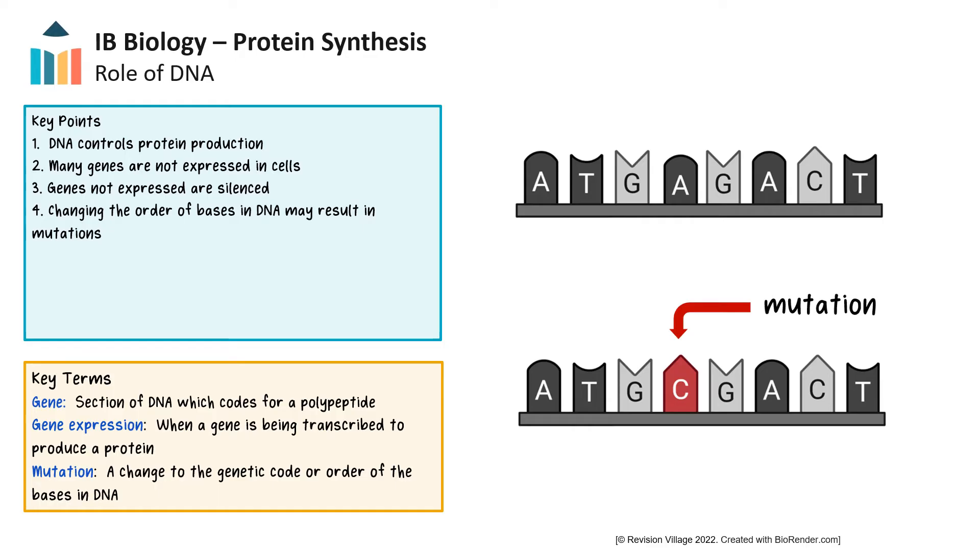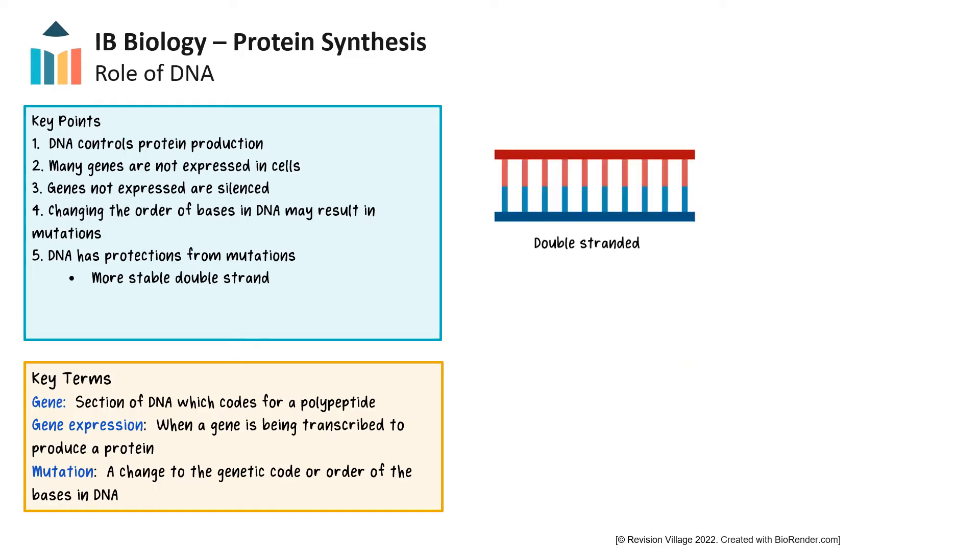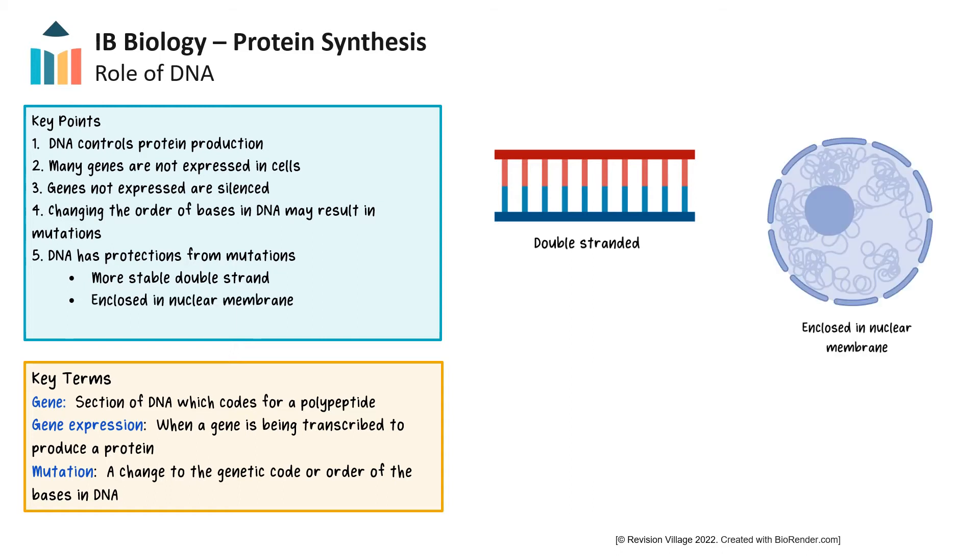DNA is protected from mutation in many ways. Some of the structural protections in DNA is that it's double-stranded, which stabilizes the molecule. DNA is also protected by the nuclear membrane, isolating it from the metabolic activity in the cytosol of the cell, as well as DNA being wrapped around histone proteins. DNA is also protected from mutagens and carcinogens that cause changes to DNA through repair mechanisms that can correct changes to DNA sequences.